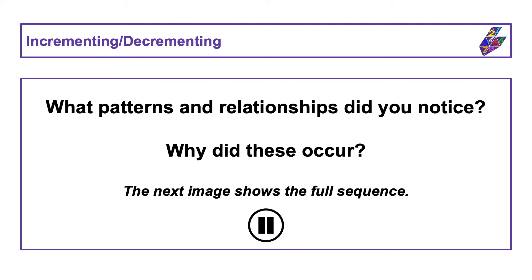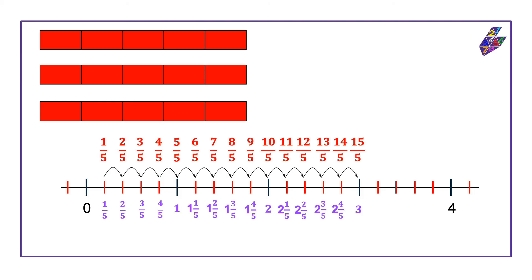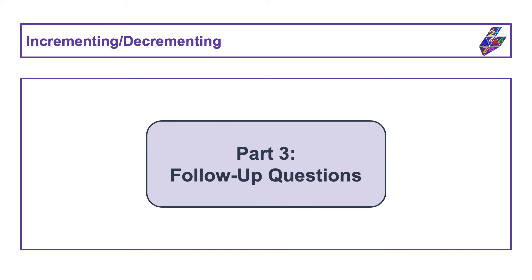What patterns and relationships did you notice in the sequence we just explored? Why do you think these patterns and relationships occurred? The next image shows the full sequence. In part three we'll explore some questions connected to what we saw and try to explore some further patterns and relationships and make sense of why these are happening.